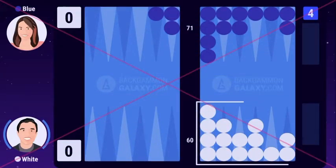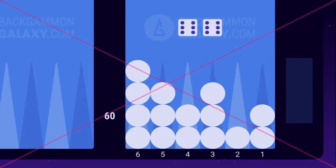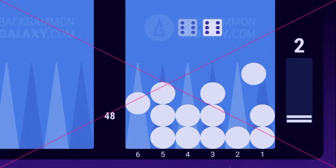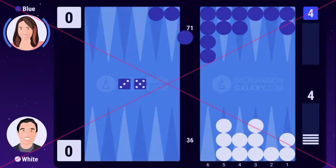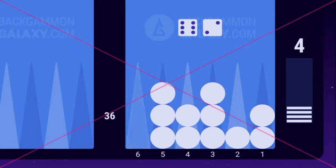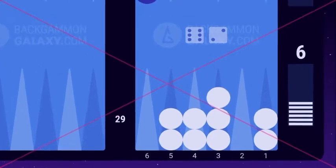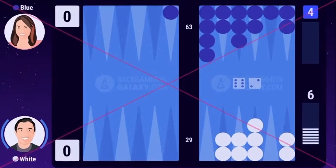All of white's checkers are now inside his home board, allowing him to start bearing off. White rolls 6-6 and bears off 4 checkers from the 6 point. Blue rolls 3-5 and moves his checkers. White rolls 6-2. Since he no longer has any checkers on the 6 point, he must use the 6 to bear off the backmost checker, which is on his 5 point. The 2 can be moved with any of these checkers. But since backgammon is a racing game, it's a good idea to be greedy when bearing off, especially when there are no threats of being hit by your opponent.